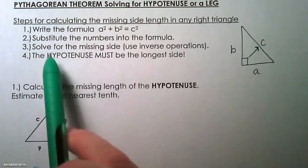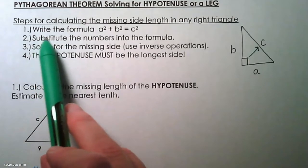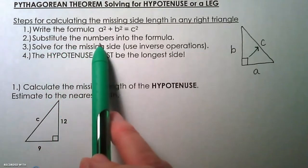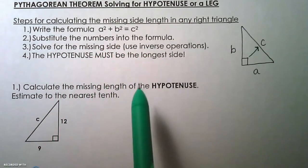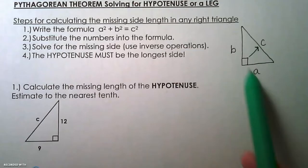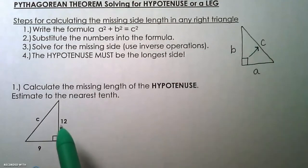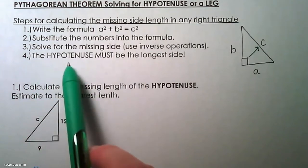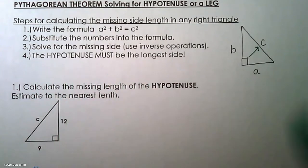So we're going to look at the steps. The steps for this process are to write the formula a squared plus b squared equals c squared. Substitute the numbers or the values into the formula with the correct variables, so a and b are the legs and c is the hypotenuse. Solve for the missing side using inverse operations, and remember that the hypotenuse must be the longest side.